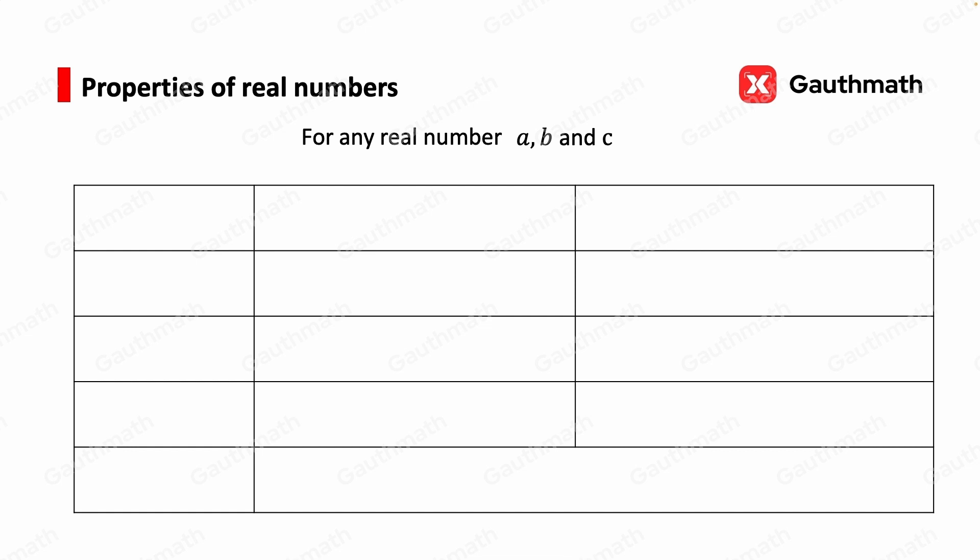Addition and multiplication are commutative, meaning the order when the numbers are added or multiplied will not change the result.